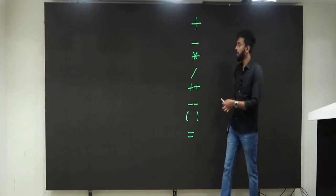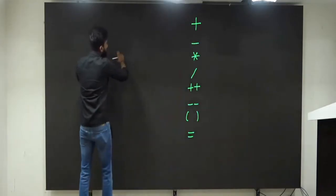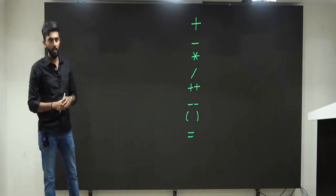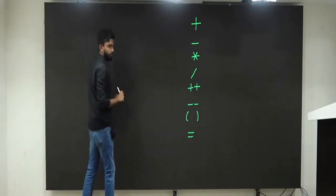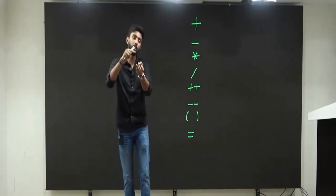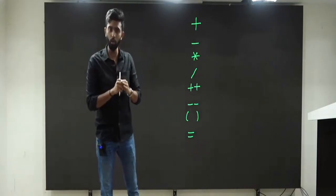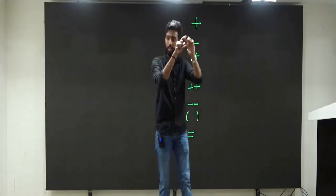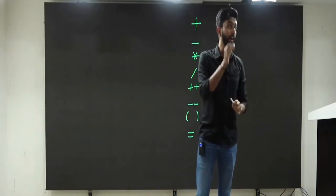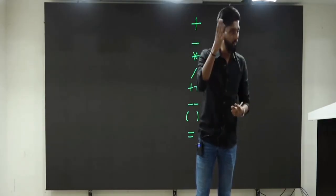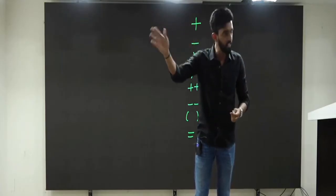Now listen to me — if I write a mathematical expression, all of you have solved equations in your schooling. Whenever you have a mathematical equation, many operations will be there: addition could be there, multiplication could be there, division could be there. Now imagine multiple operations are combined in an expression. In schooling, they taught you one rule called BODMAS. Brackets off, then division, then multiplication, then addition, then subtraction.